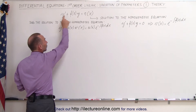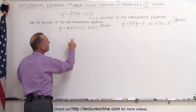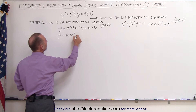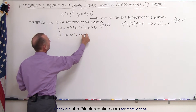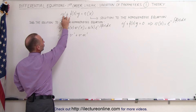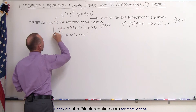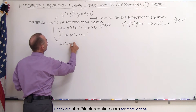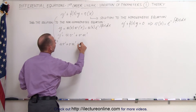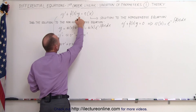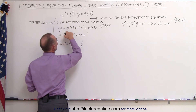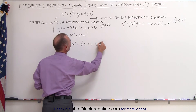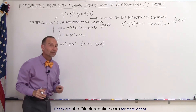We need to find out what y prime is equal to. If y is equal to u times v, then y prime can be written as the first times the derivative of the second plus the second times the derivative of the first. We substitute that in for y prime, so the equation becomes u times v prime plus v times u prime plus some function of x, f, times y, where y is u times v, and that equals r of x, the non-homogeneous part of the equation.